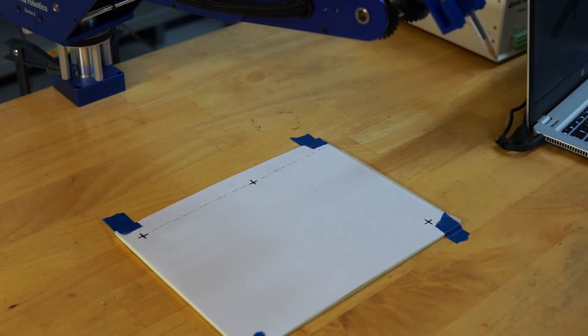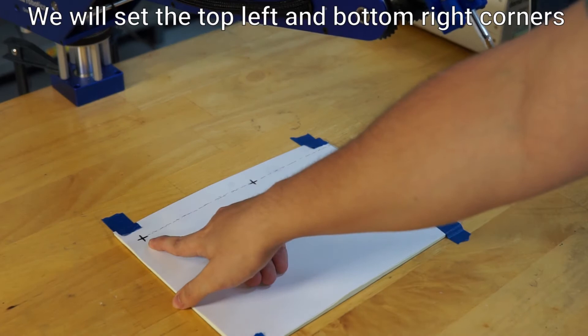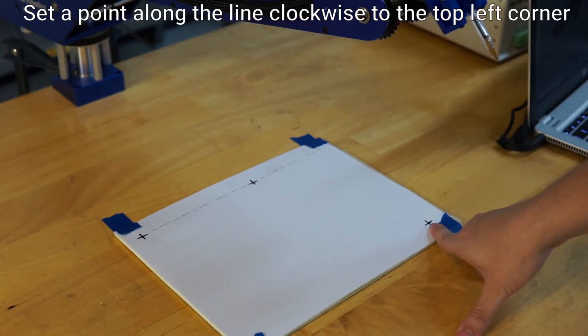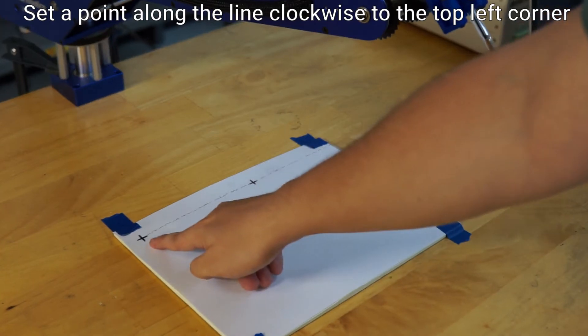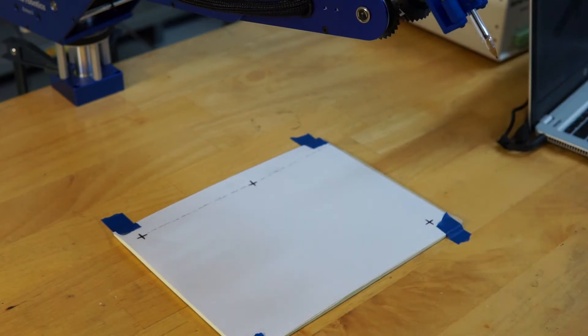In order for the robot to draw on a surface a plane needs to be established. We will set three corners. To start we will set the top left and the bottom right. Lastly a point along the line clockwise from the top left. This line is shown as dashed and the points used are all fixed on the paper.